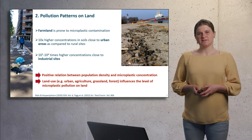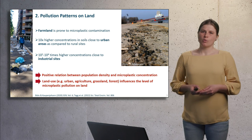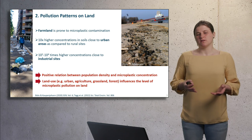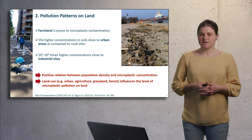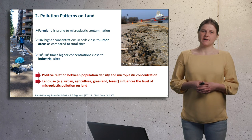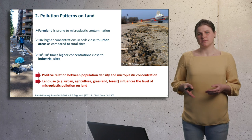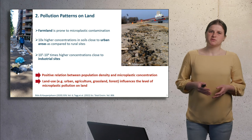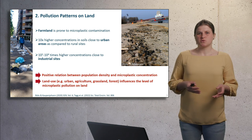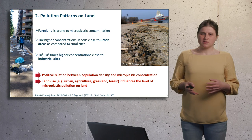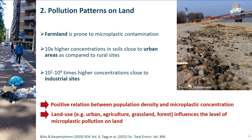As can be seen, farmland is prone to microplastic contamination, whereas for other land use categories only limited data exists, for example forests or grassland, but it is commonly agreed that the pollution level is lower in these areas. Higher concentrations of microplastics in soils are found close to urban sites compared to rural sites, with on average about an order of magnitude higher concentrations in urban areas. Extreme values are found close to industrial sites and exceed common concentrations by about 2 to 4 orders of magnitude. To conclude, there is a positive relationship between population density and microplastic concentration in soils, and land use influences the level of microplastic pollution on land.